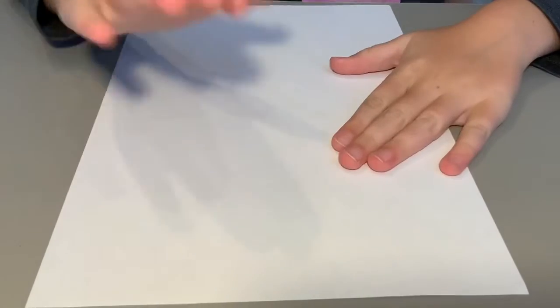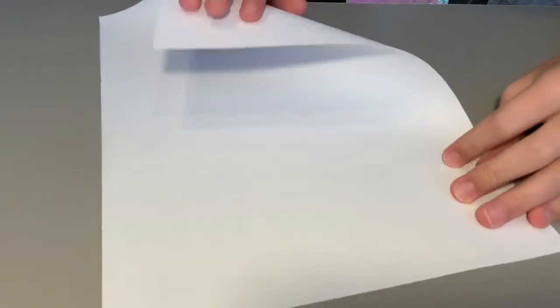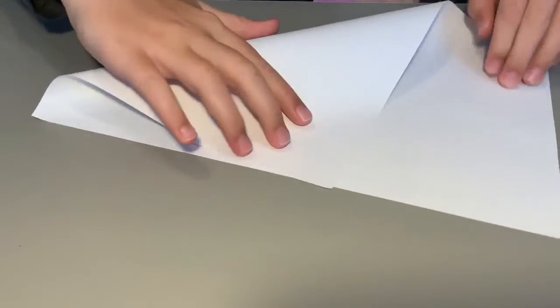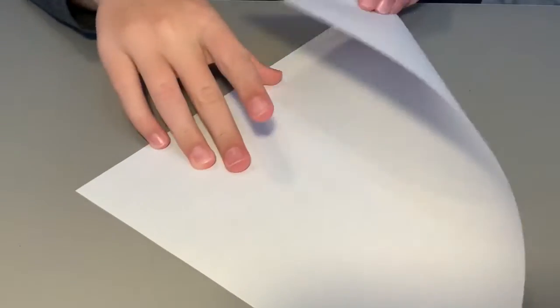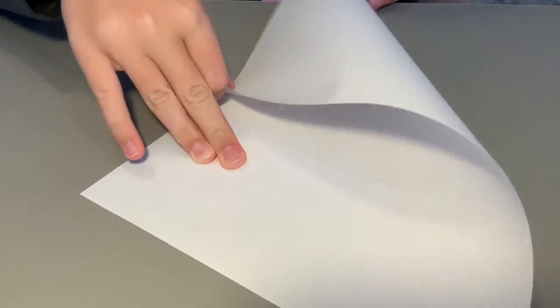Hey guys, this is Kiwi back here. Today we're going to be making a fortune teller, so let's get started. First you need an A4 piece of paper, then you bend it like this.